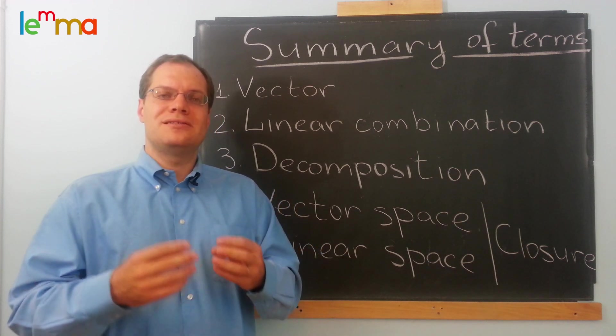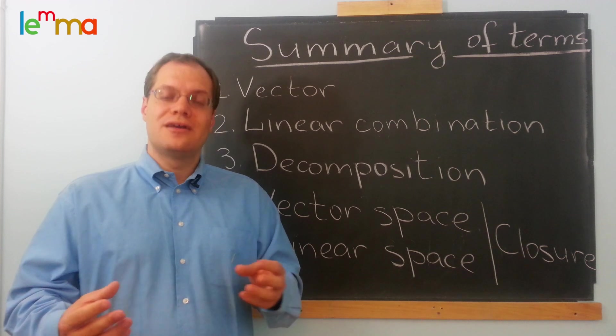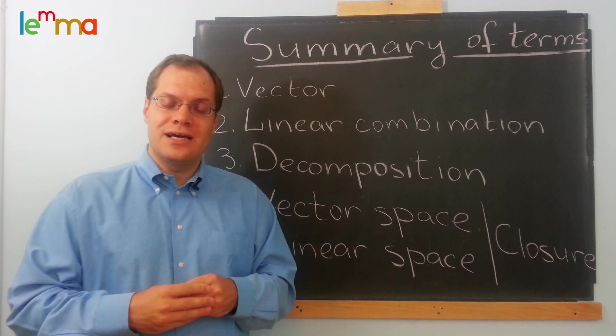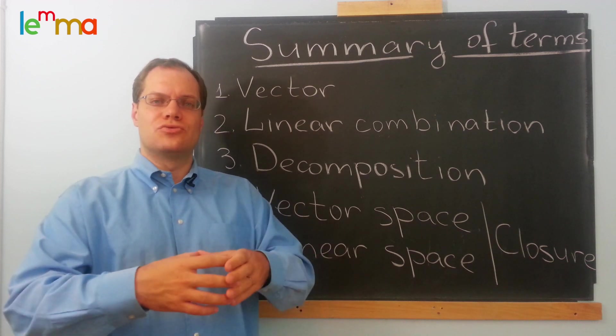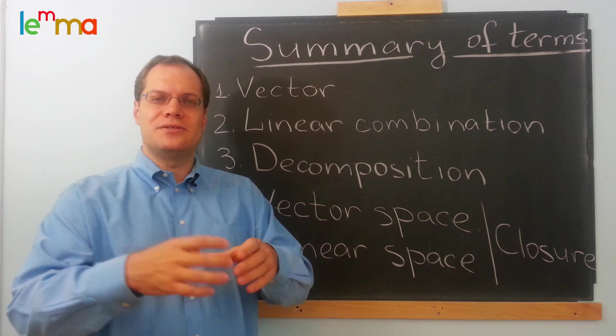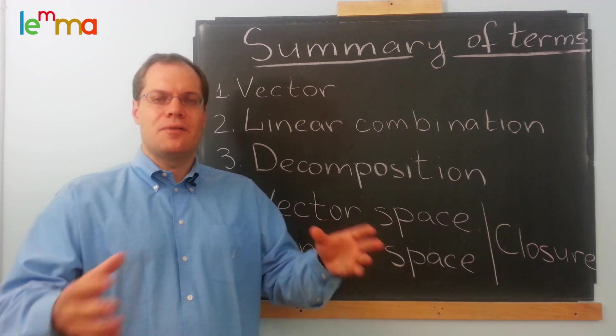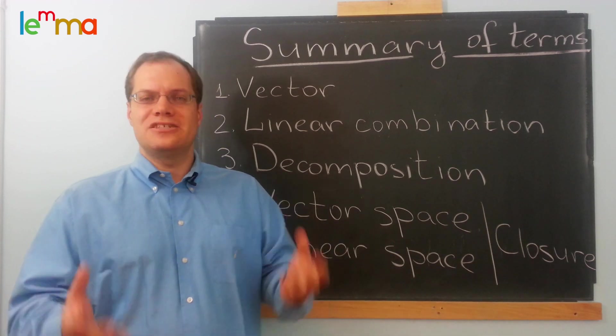Closed under addition means exactly what we said before, that a sum of two objects of that kind is another object of that kind. It's a closed island. It's a closed room. It's a closed space. You can't get out of that space by addition or multiplication by a number.